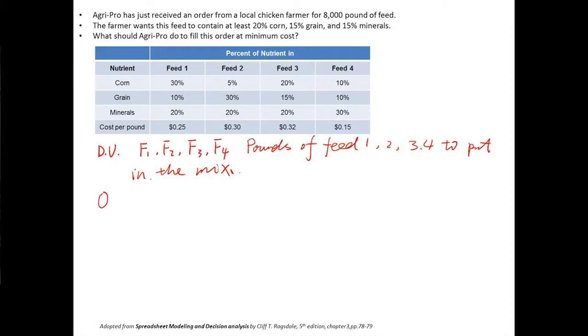Our objective function is to minimize the total cost. That's pretty easy for you guys now. It's the unit cost multiply the pound and you sum them together. So we want to minimize total cost: 0.25F1 + 0.30F2 + 0.32F3 + 0.15F4.